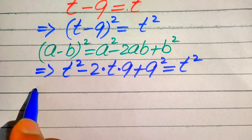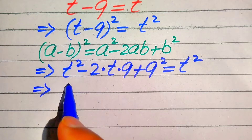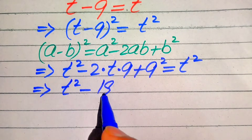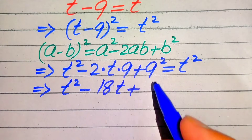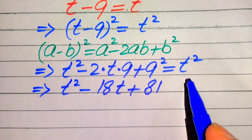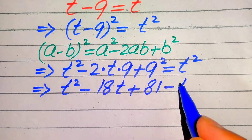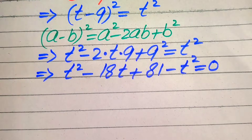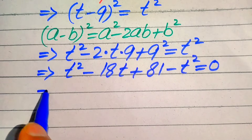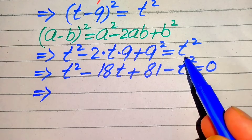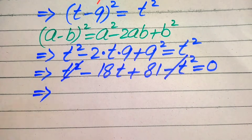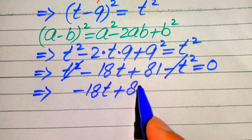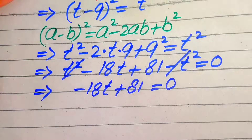Now further simplifying: 2 times 9 is 18, and 9 squared is 81, giving t square minus 18t plus 81 equals t square. We move t square to the left hand side as minus t square, so the t square terms cancel and we get minus 18t plus 81 equals 0.